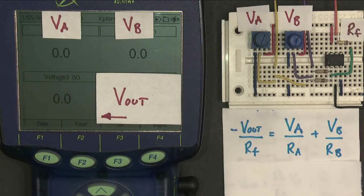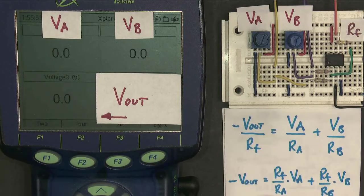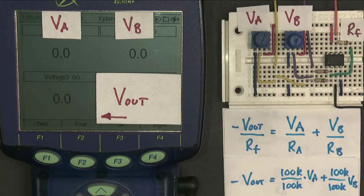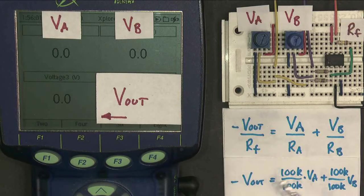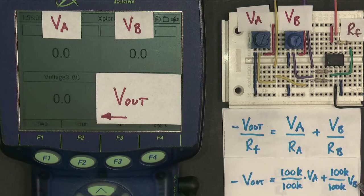Rearranging it looks a little bit more messy. I get that equation there. And for the values that I've got on the circuit board here, I get minus Vout is 100K over 100K times VA, plus 100K over 100K times VB.